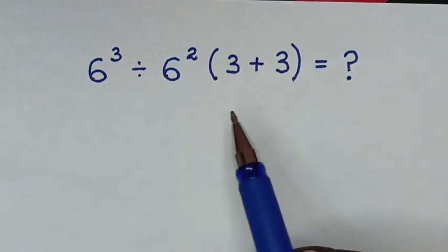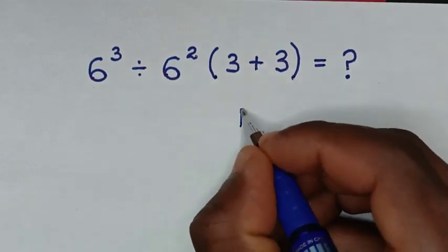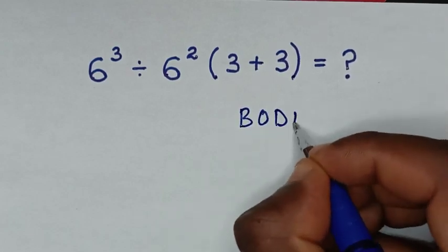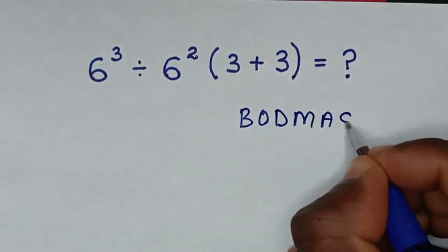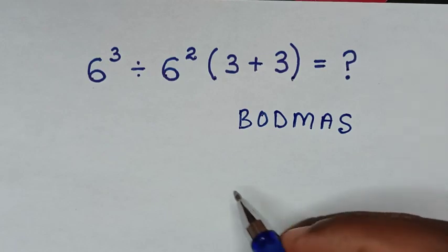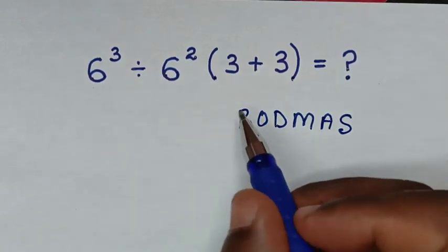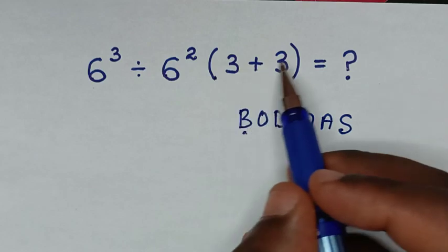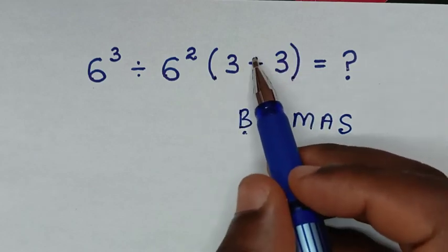From this math problem, we'll solve it by using BODMAS rule, where B is bracket. In here we have a bracket, and the operation inside the bracket is this addition operation.